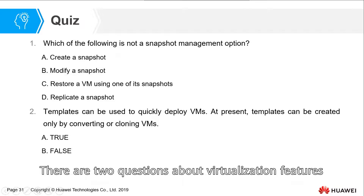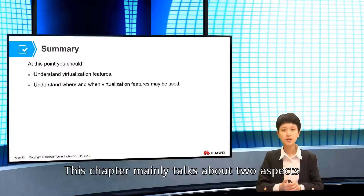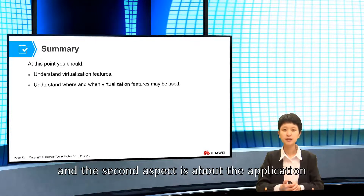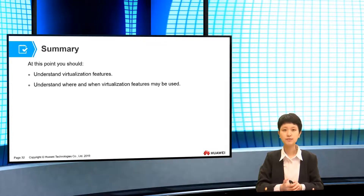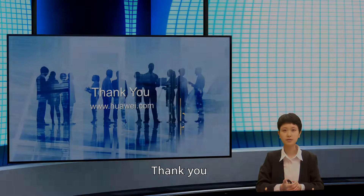There are two exam questions about virtualization features: the first is about snapshots, and the second is a true/false question. This chapter mainly covers two aspects: the characteristics of virtualization and the application scenarios of virtualization features. The content of this lecture is complete. Thank you.